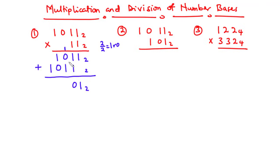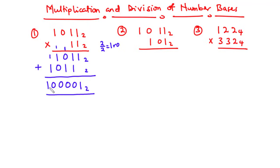1 plus 0 is 1. 1 plus 1 is 2. So 2 divided by 2 is 1 remainder 0. We have the remainder and carry on the 1. 1 plus 1 is 2, also we have 0 and carry on the 1. 1 plus 1 is 2, so we have 0 and carry on the 1. Therefore, this is going to be our final answer.